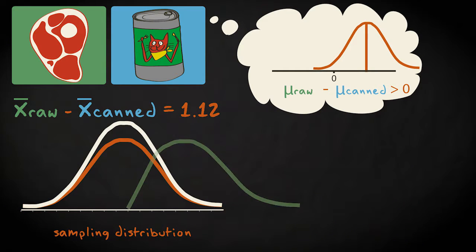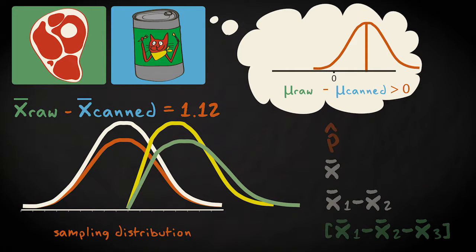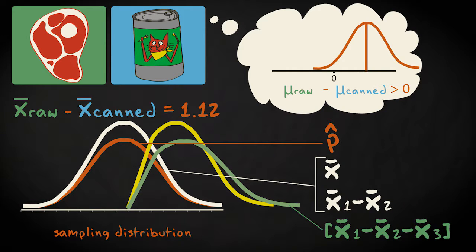The shape of the distribution is determined by the type of statistic we're interested in. Statisticians like Fisher, Pearson, Gossett, and Neyman have all shown that proportions, means, differences between two means, differences between more than two means, they're all associated with differently shaped distributions.